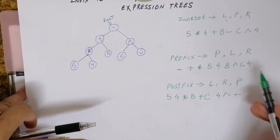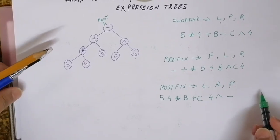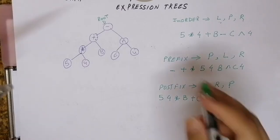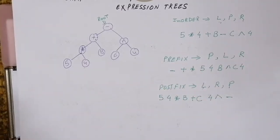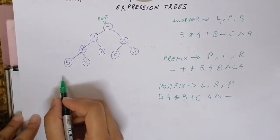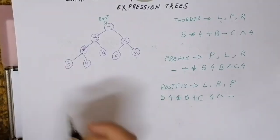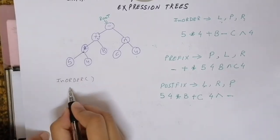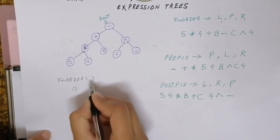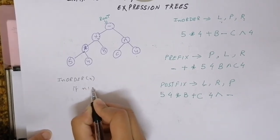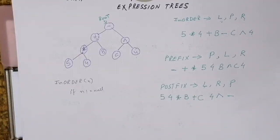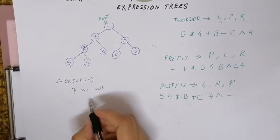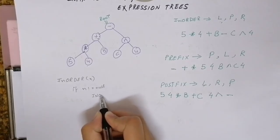So using this expression tree, you have converted a given expression from infix to prefix and postfix notation. For those who are still confused about what in-order, pre-order, and post-order traversal algorithms look like in code — in in-order traversal, the function takes a node n, and if n is not null, it proceeds.